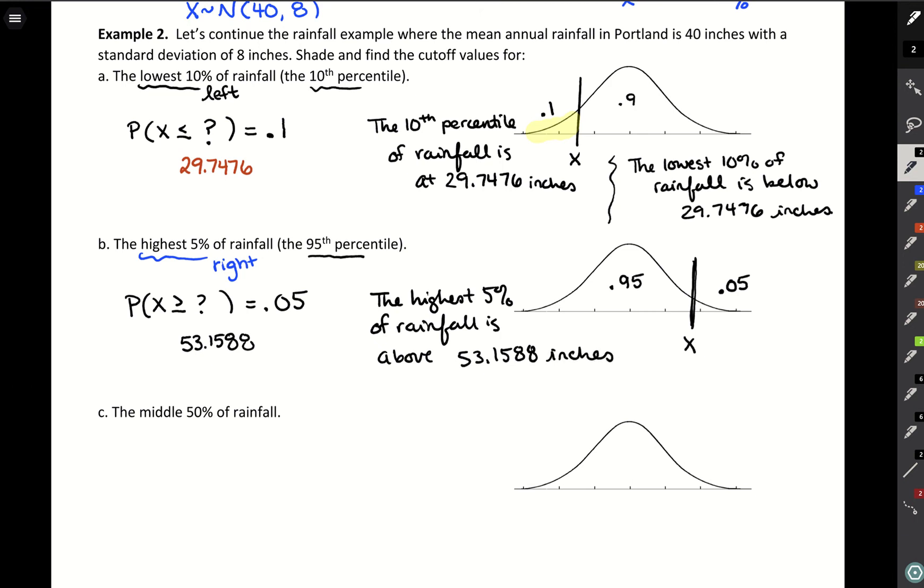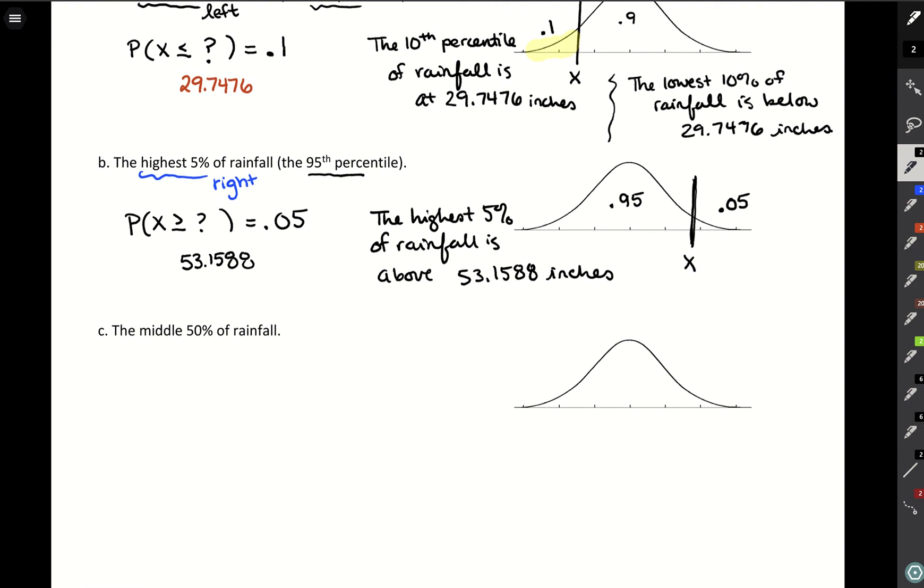All right, and then this last one wants a middle 50 percent. So what this is going to look like is we're going to go below and above, and it should be more symmetric than that, but basically in a symmetric way, we want to cut out this 50 percent in the middle here, which means we're going to have two X values. We're going to have this lower X value which I'll call x1 and this upper value x2.